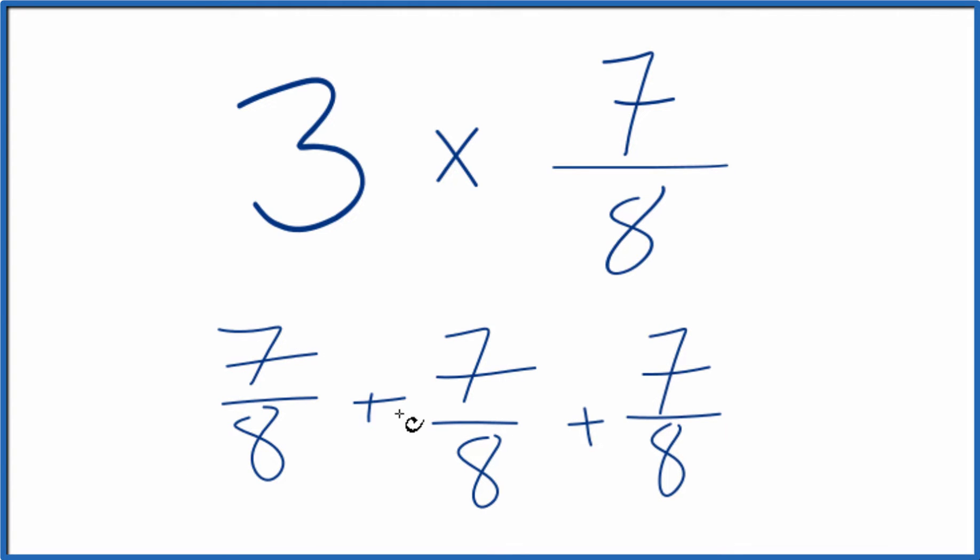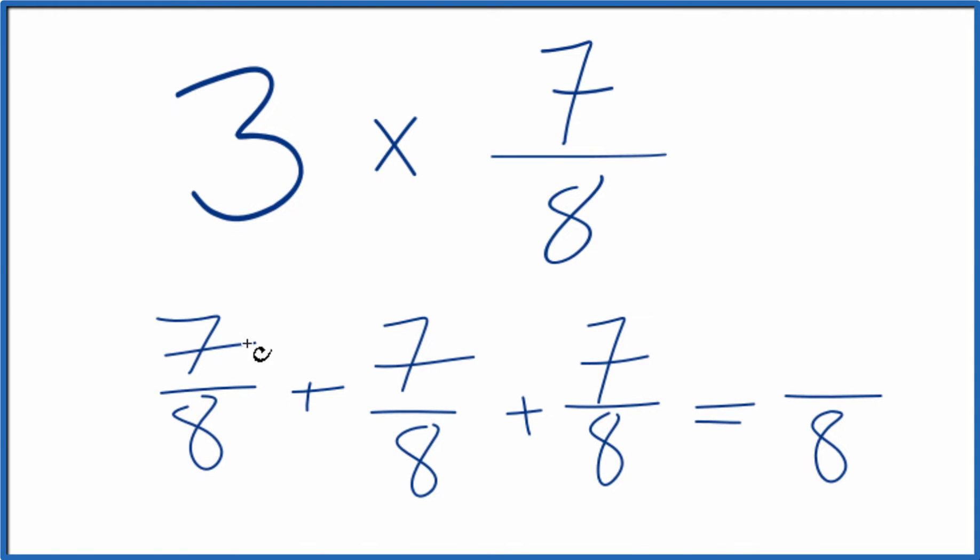So we have 1, 2, 3. That's our 3 times 7 eighths. So when you add fractions, if the denominator is the same, we're going to keep that the same. And then the numerator, 7 plus 7 is 14, plus 7, 21 eighths.